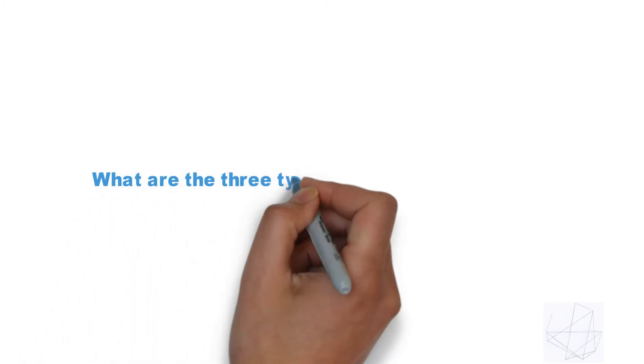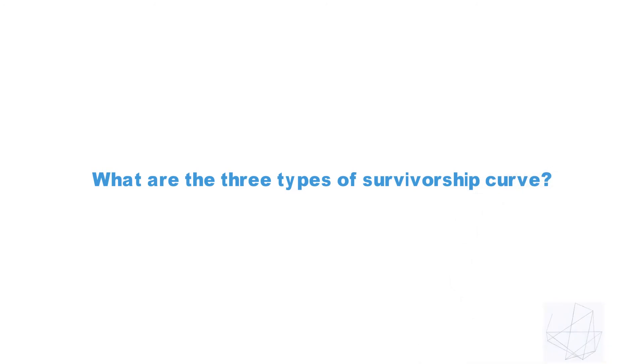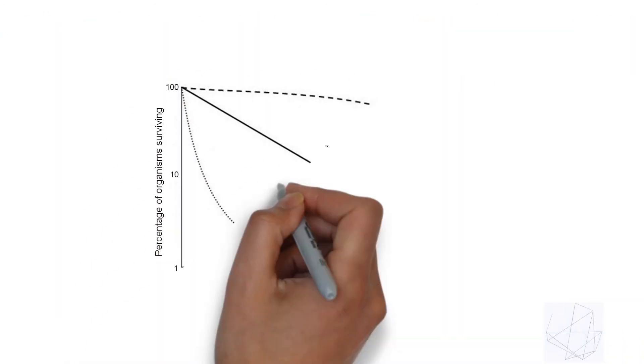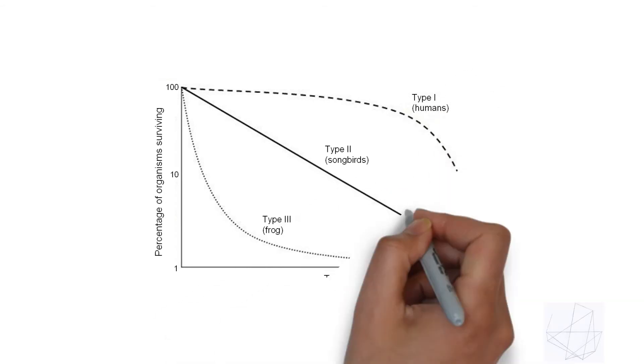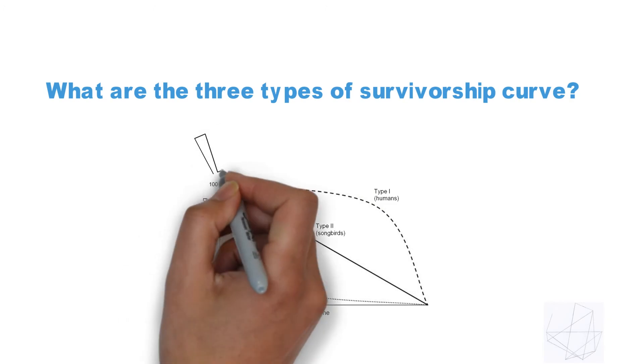What are the three types of survivorship curve? There are three types of survivorship curves. On the y-axis is the percentage number of an organism surviving on a given day when it is born. On the x-axis is the time in the case of its lifespan, also known as age in relative units.